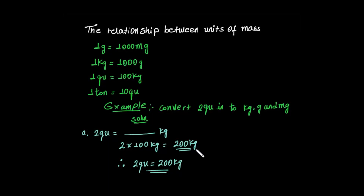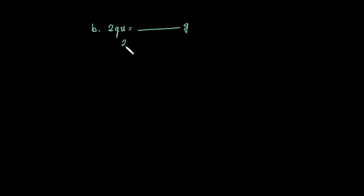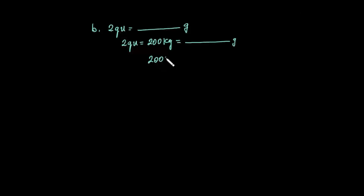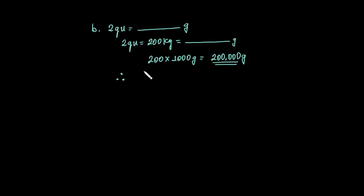We are going to write: 2 quintals is equal to 200 kilograms. Then to convert into grams, there is a relation between kilogram and gram — 1 kilogram equals 1000 grams.